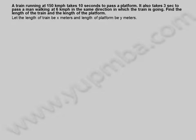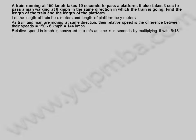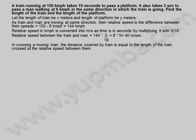As train and man are moving in the same direction, their relative speed is the difference between their speeds: 150 minus 6 kilometers per hour equals 144 kilometers per hour. Relative speed in kilometers per hour is converted into meters per second by multiplying with 5 by 18. Relative speed between the train and man equals 144 into 5 divided by 18, which equals 8 into 5, equals 40 meters per second.